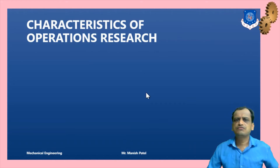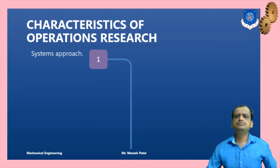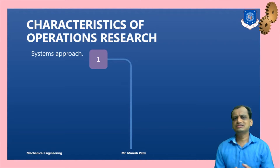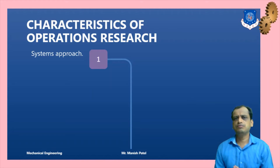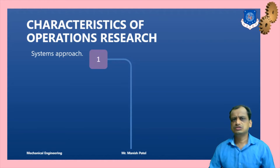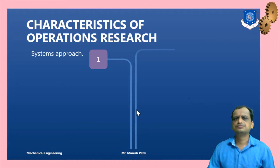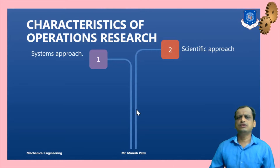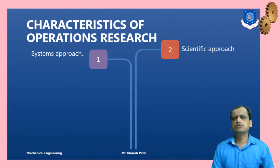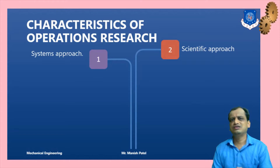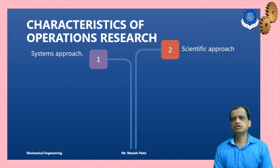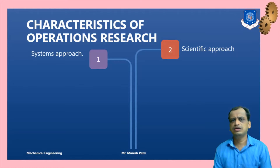Now, what are the characteristics of operations research? First, it is a systems approach — it works on the system, which is nothing but interconnected and interdependent entities. Whenever you address any problem, you look into all those interconnected and interdependent entities. Second, it is a scientific approach. As seen in the definition, it depends on scientific principles. The tools and techniques derived from operations research are purely based on scientific principles — it is not a qualitative approach; it is a purely quantitative approach. You convert problems into mathematical models and then solve them.